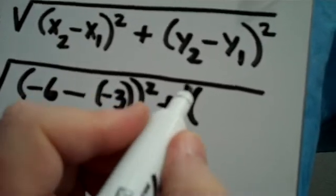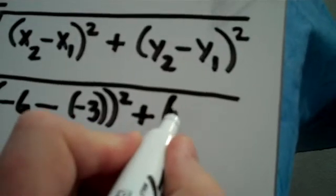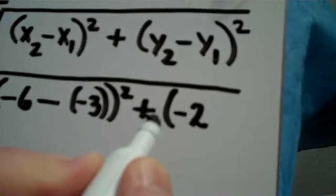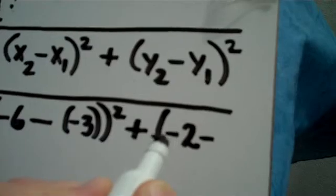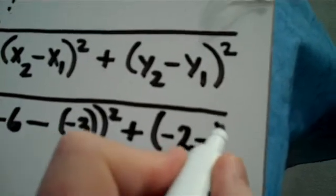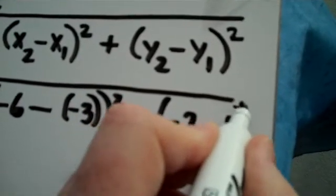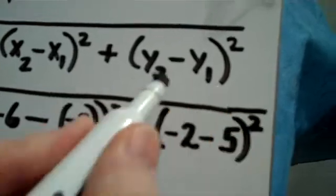Plus y sub 2 is a negative 2, minus comes from the formula, and y sub 1 is 5, and that quantity is being squared.